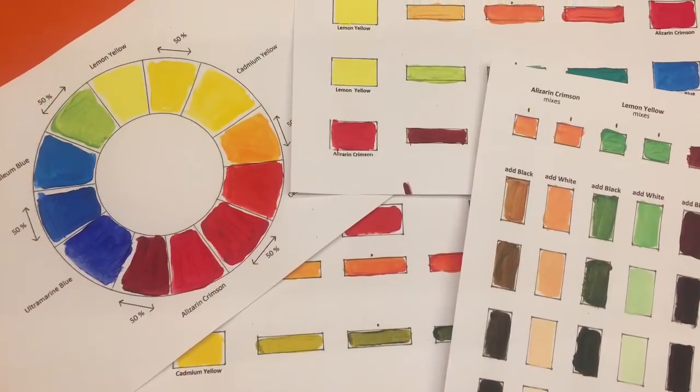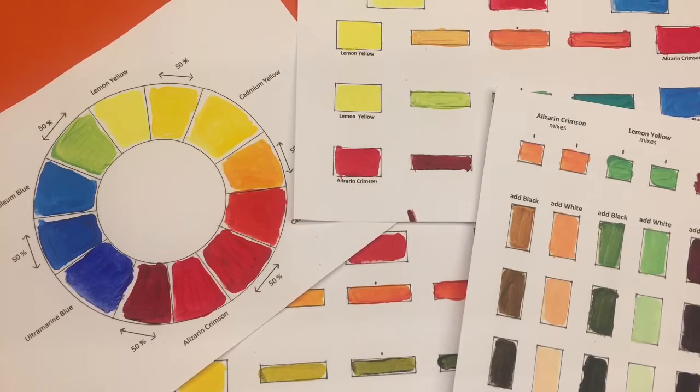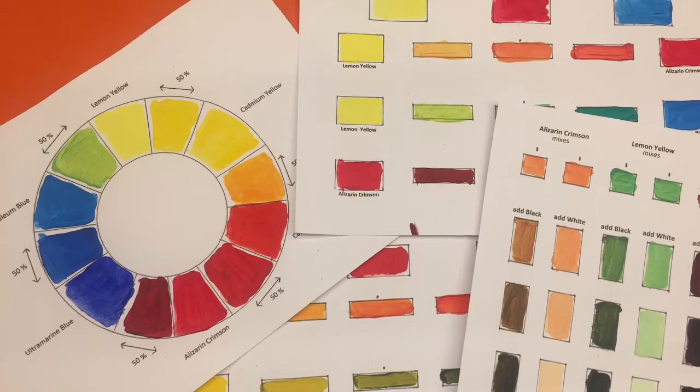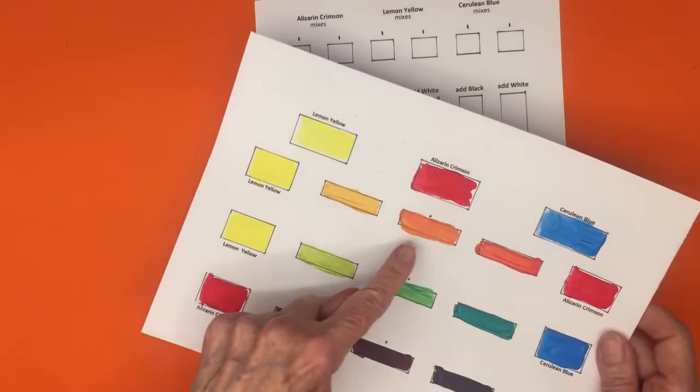This is part 5 of how to paint a color chart. Make sure you have completed the first four parts before you start part 5. Download the template in the description below.